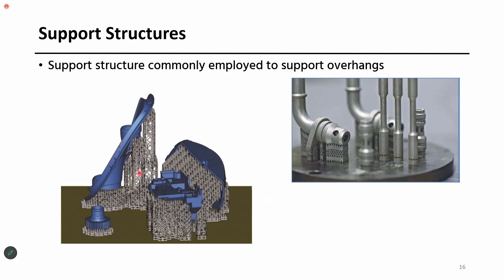After printing, if you want to remove the support structures, it can be done manually or it may need some additional machining process. How is your support structure attached to the main part — is it easily removable or does it need additional machining process after 3D printing? That's also important.